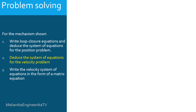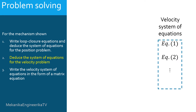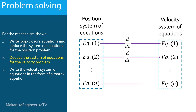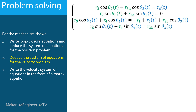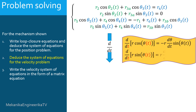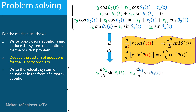Let's move now to the second question. We are going to deduce the system of equations for the velocity problem starting from the system of equations of the position problem. The position equations will be differentiated with respect to time. We recall that the time derivative of R cosine theta(t) equals minus R times d theta over dt times sine theta(t), and the time derivative of R sine theta(t) equals R times d theta over dt times cosine theta(t). The time differentiation of the first equation gives: minus R2 d theta 2 over dt times sine theta 2, minus R3A d theta 3 over dt times sine theta 3, equals DR6 over dt.